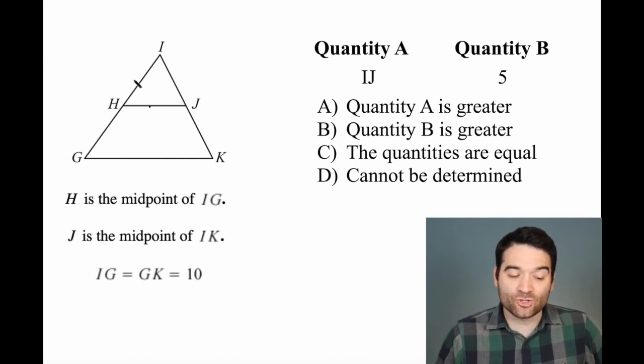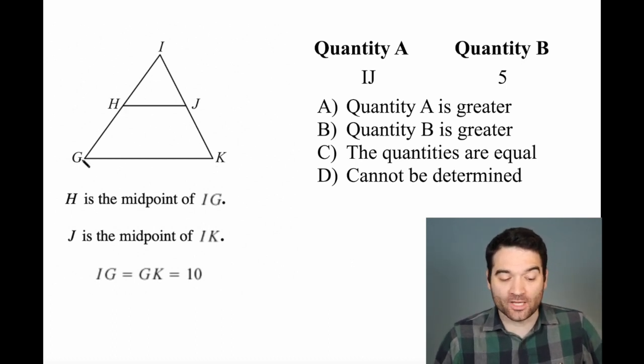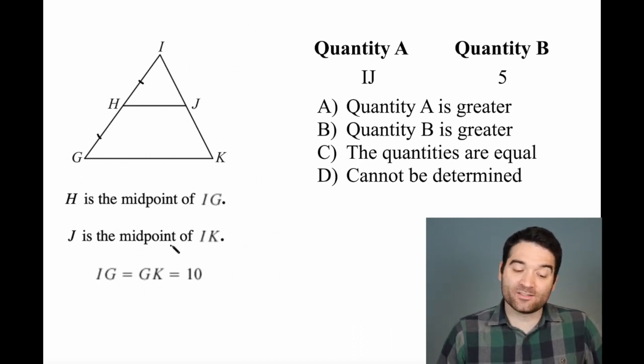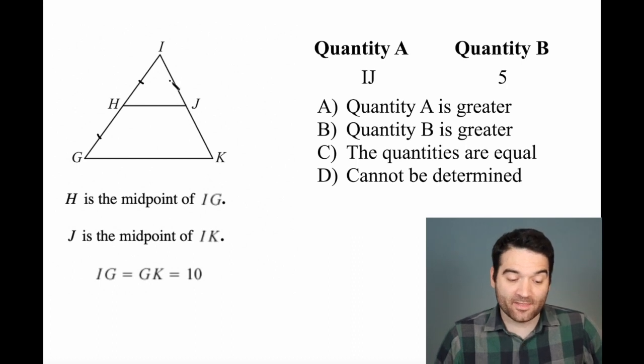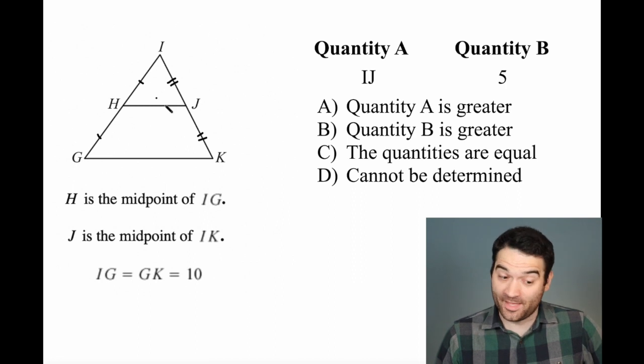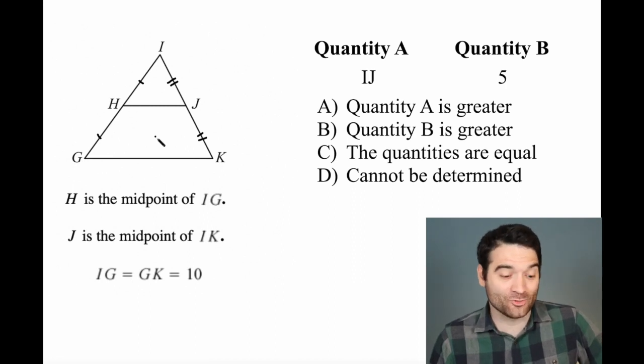and we're told that H is the midpoint of IG, so that means that this distance is equal to that distance, and that J is the midpoint of IK. So J is right there, that means that this distance is equal to that distance. We don't know that they're equal to each other. We can't assume that,